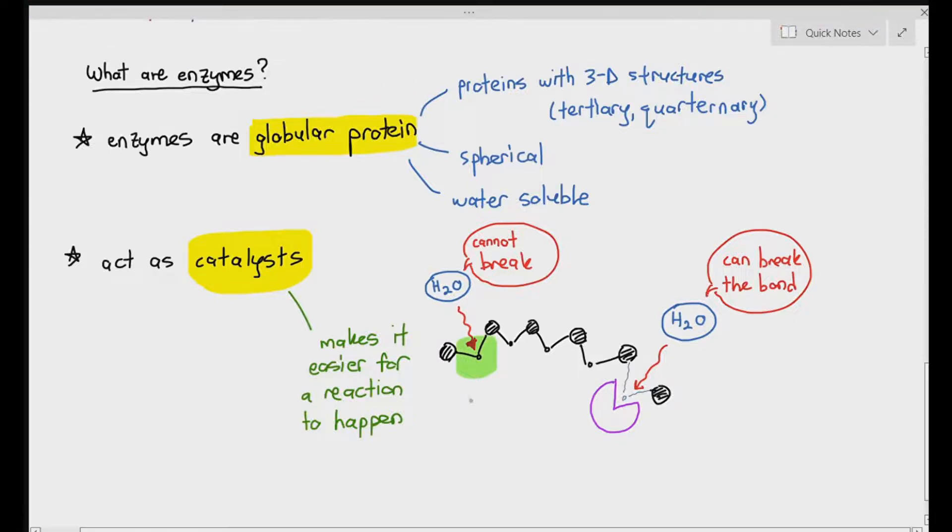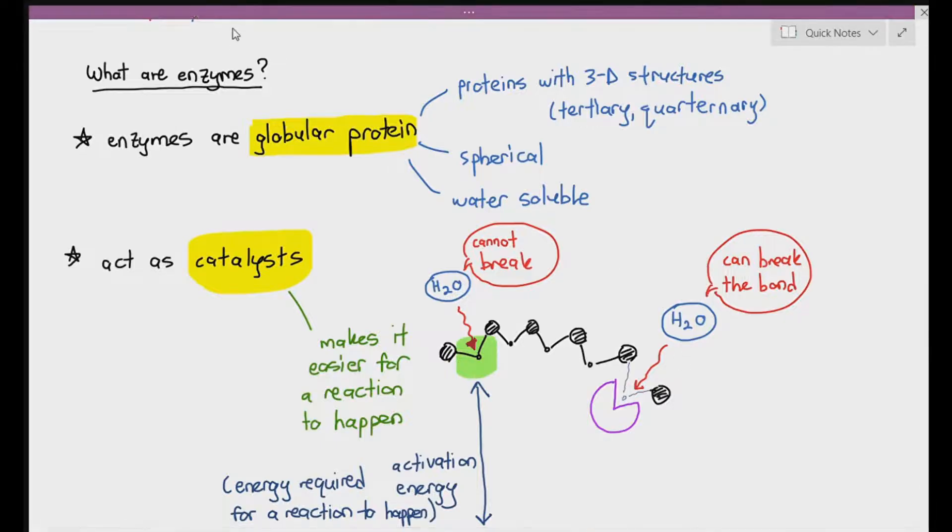Now, the amount of energy needed for the water to break the bond, on the left side, it needs a lot of energy. You need to give the water a lot of energy so that it's able to break the glycosidic bond. That energy is referred to as something known as activation energy. By definition, the energy required for a reaction to take place. But with the help of the enzyme, do you need to give the water a lot of energy or does it need to achieve that high amount of activation energy?